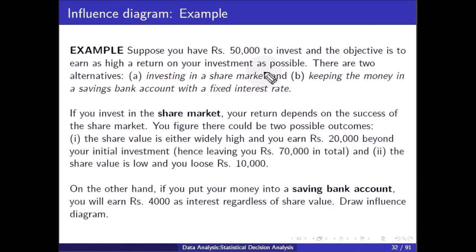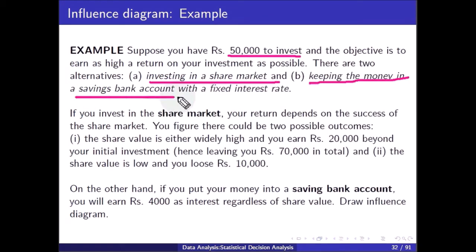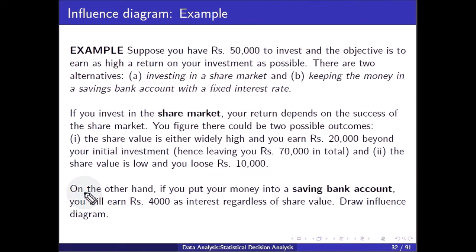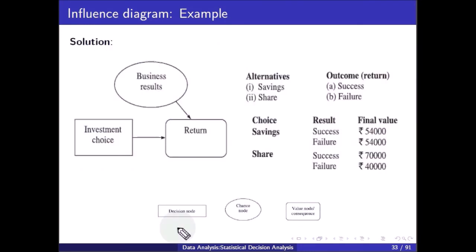Example: Suppose you have 50,000 rupees to invest and the objective is to earn as high a return as possible. There are two alternatives: investing in the share market or keeping the money in a savings bank account with a fixed interest rate. If you invest in the share market, your return depends on the success of the market. The share value could be high, earning 20,000 rupees beyond your investment for a total of 70,000 rupees, or low, causing you to lose 10,000 rupees. If you put money in the savings bank account, you earn 4,000 rupees as interest regardless of share value.